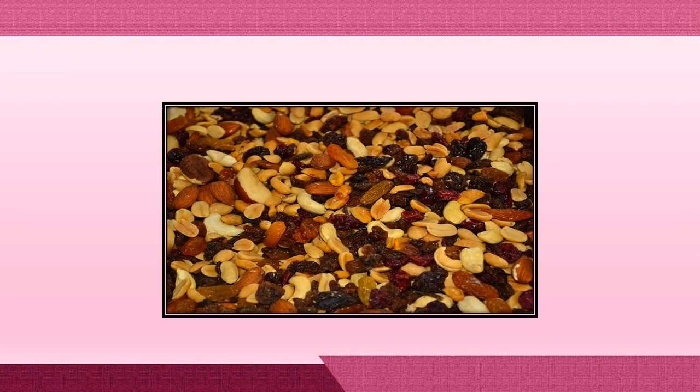Let's take for example the mixed nuts. This is a heterogeneous mixture because it is a combination of different kinds of solids, and you can easily identify the different kinds of nuts. You can recognize the almond, the peanuts, the cashew nuts, and the raisins. In a heterogeneous mixture, you can recognize the different components because the particles are distributed non-uniformly.